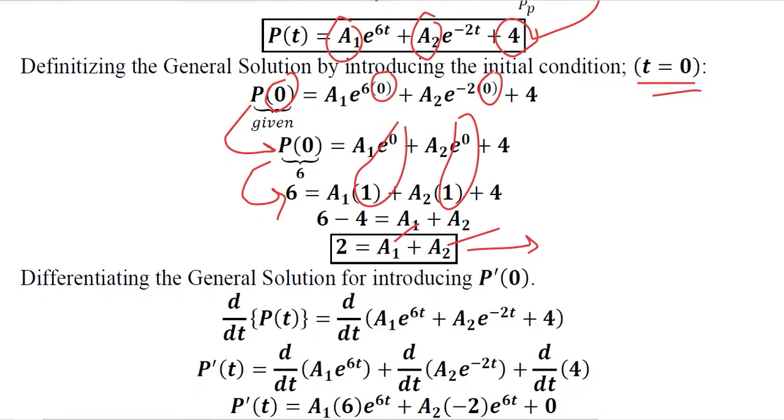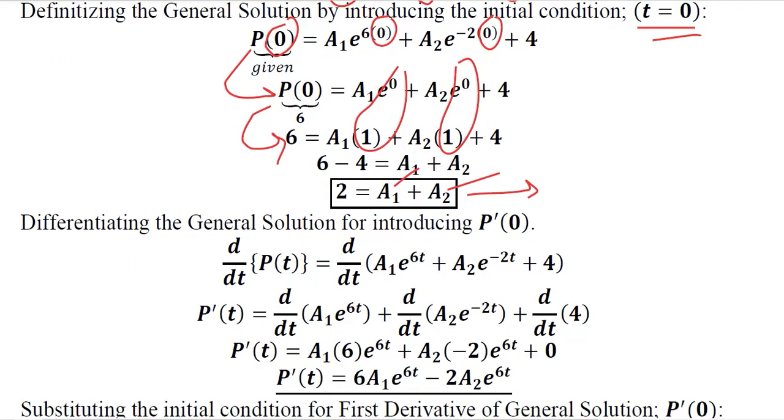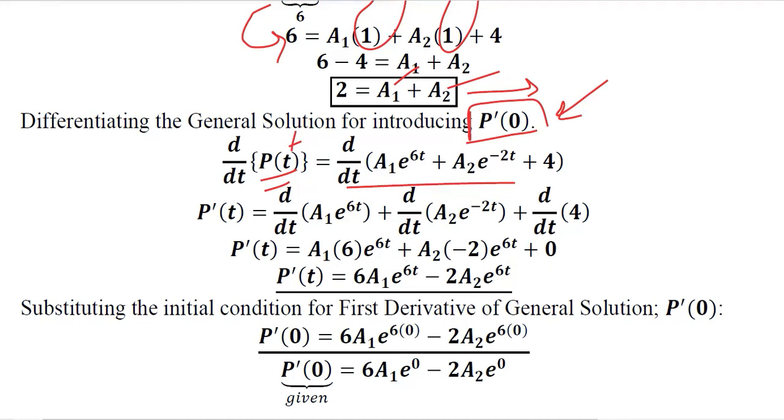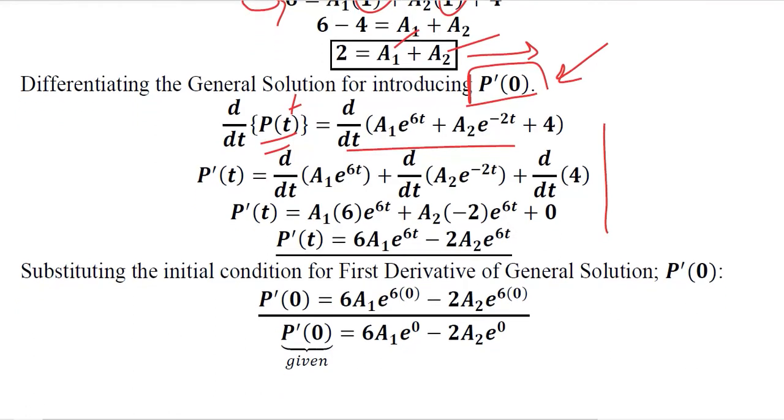Now we can use the other initial condition which is P bar 0. You know that already we can do this by differentiating Pt and then putting t is equal to 0. So the first step is to differentiate it to make it P bar t. So this is the derivative. You can pause the video and verify if these are correct. This is simple differentiation that you have learnt in your previous courses. This is P bar t and to make it P bar 0 is very easy by introducing t is equal to 0.